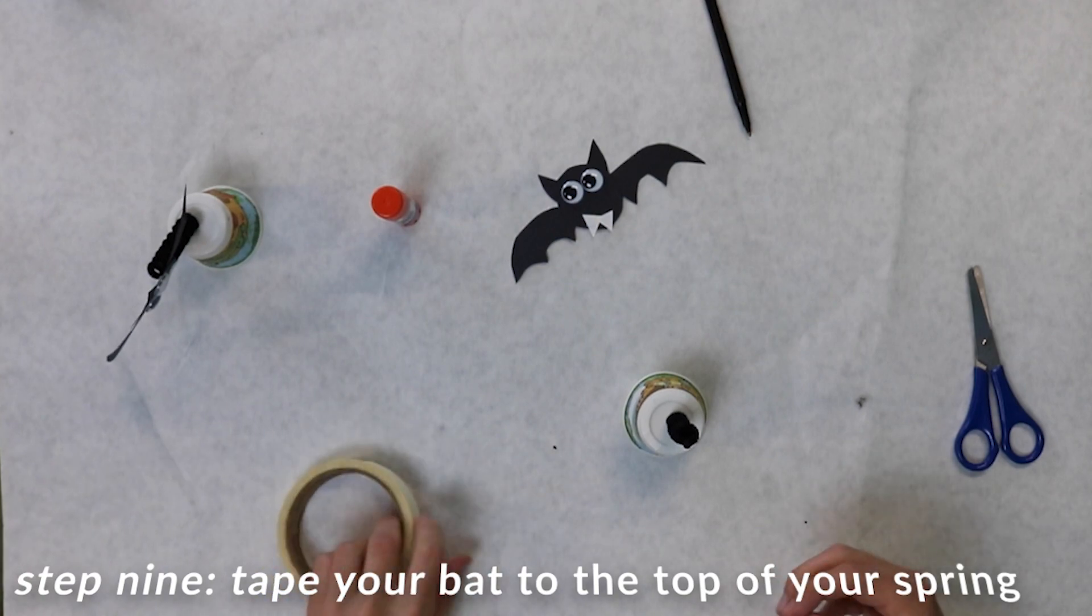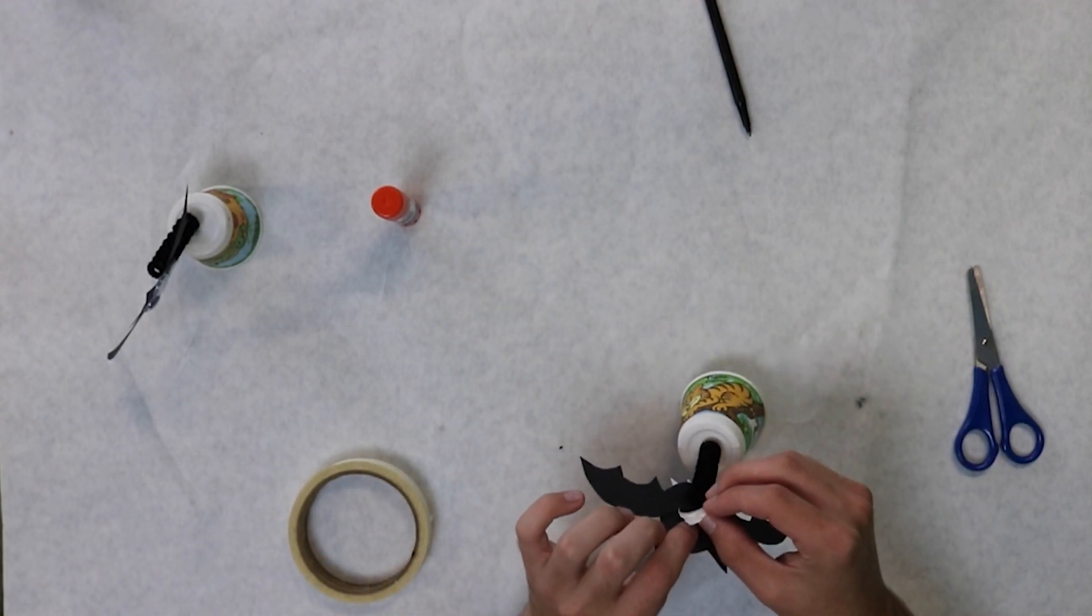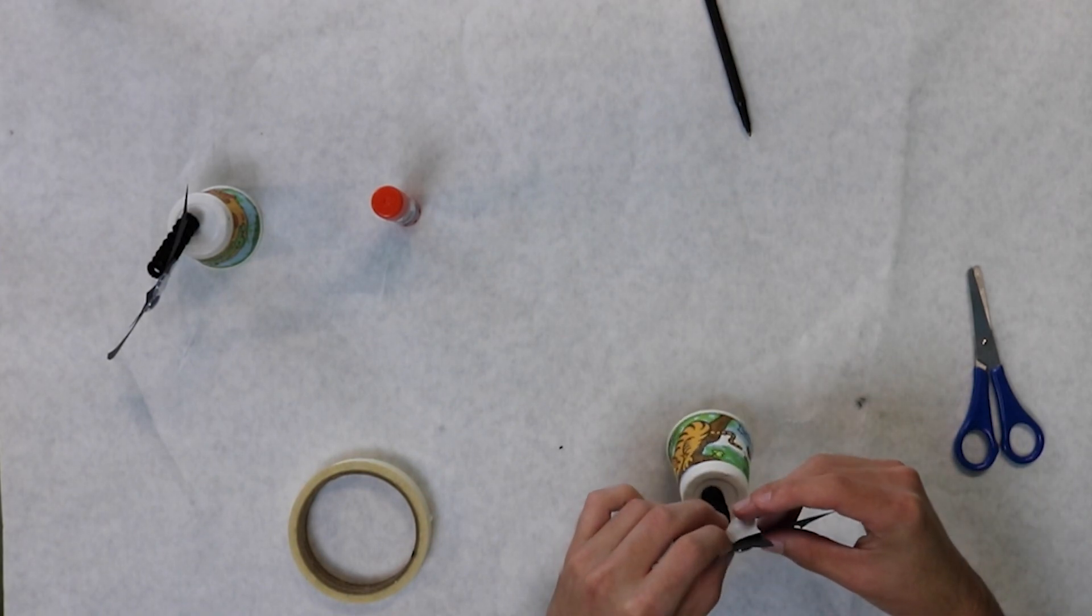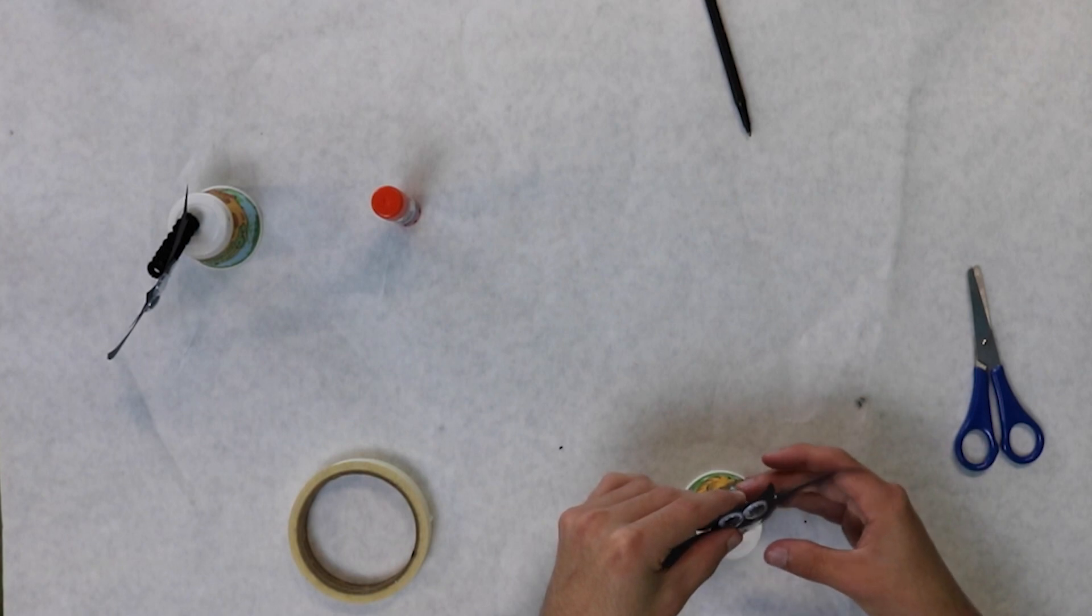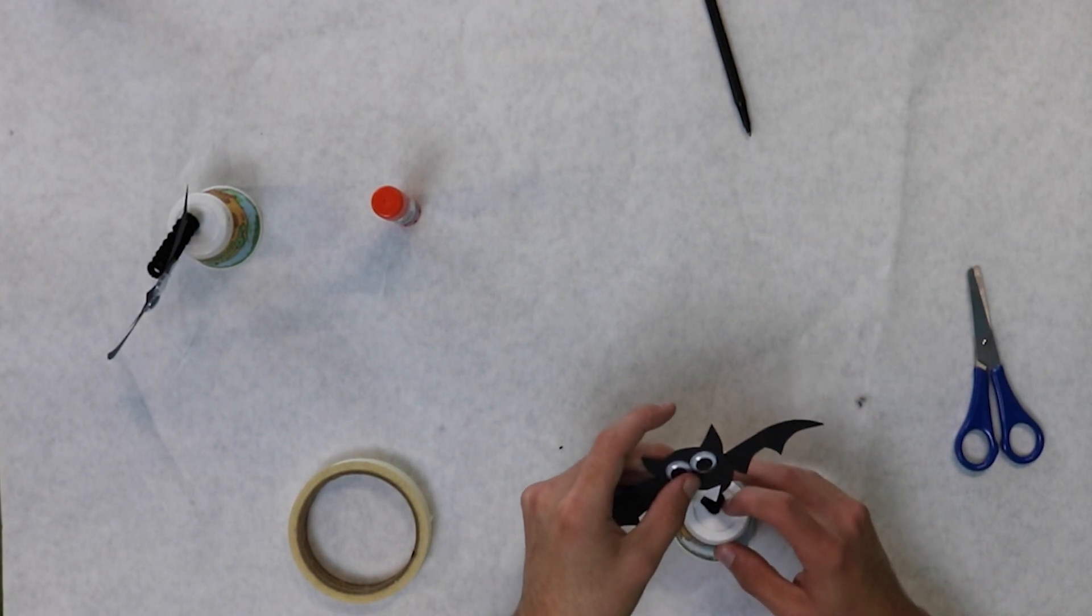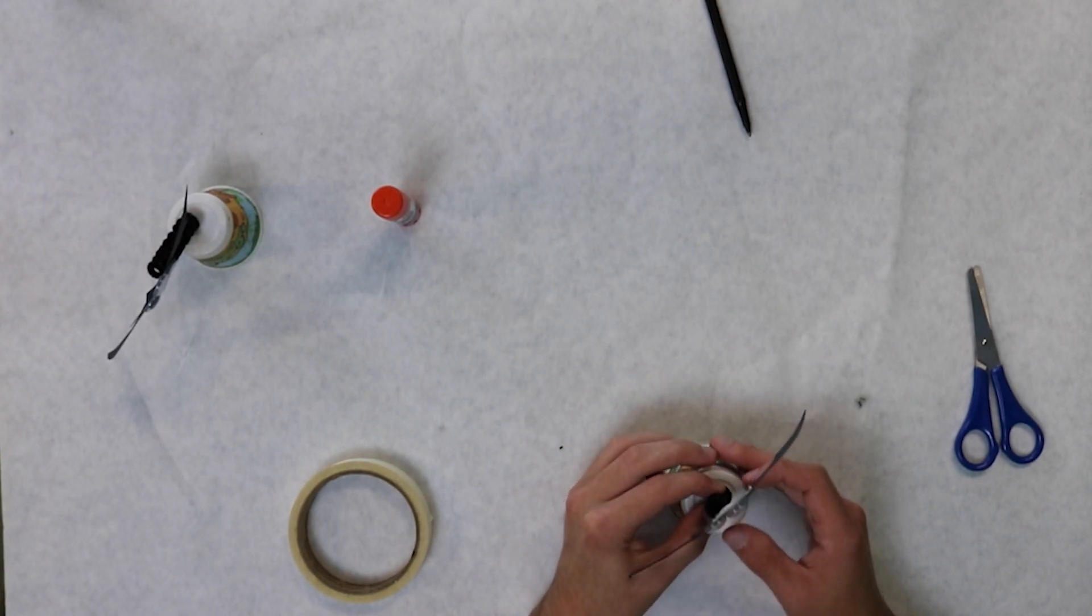The final step is to tape the spring onto the bat. Boom, now you have the bobblehead bat.